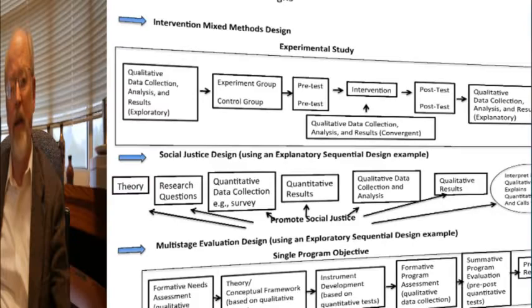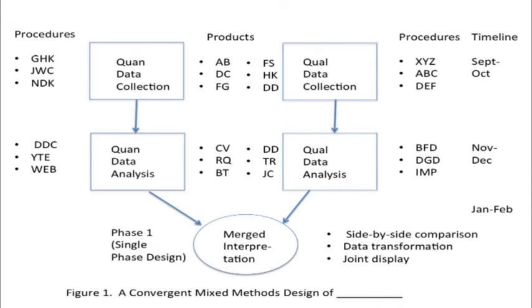Let me step you through the procedures in actually drawing these diagrams. The first step is to put some boxes in for quantitative and qualitative data collection, analysis, and interpretation. Here we see four boxes and then a circle for interpretation — remember, when we make an interpretation, we often use a circle in our diagrams. Then I add arrows to show the sequence: quantitative data collection is followed by quantitative data analysis. Along the side, I put bullets for specific procedures that array right alongside each one of the major boxes, indicating procedures to be used at each stage.